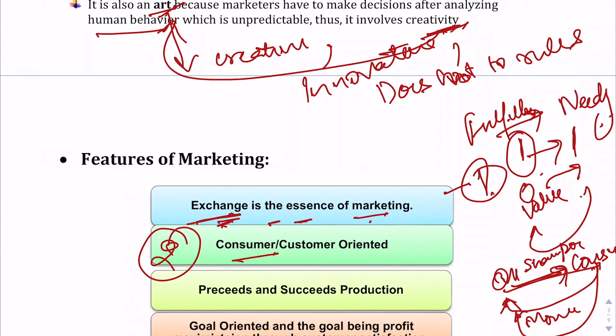The second feature: marketing is customer or consumer oriented. Marketing is about identifying needs and fulfilling them profitably. To fulfill a consumer's need, you first need to understand what they want. The marketer researches the consumer, creates a database, and analyzes important information about them. That is why it is said that the customer is the god of the market.